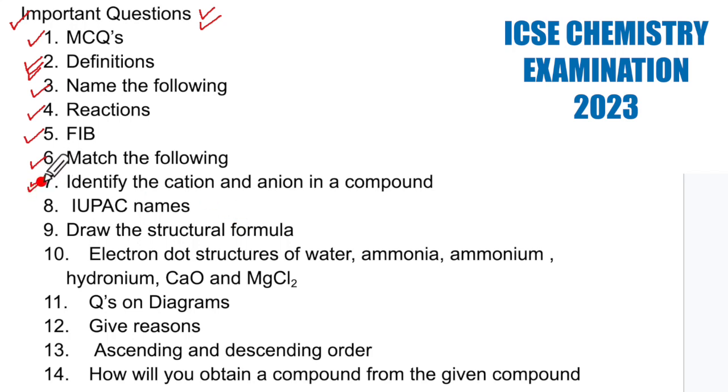Identify the cation and anion in a compound. This is from your analytical chemistry and practical chemistry. Analytical chemistry chapter will tell you how to spot the cations, identify cations and the practical chemistry will be dealing with the anions, how to identify the anions.